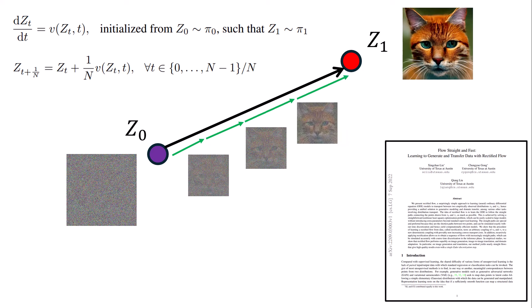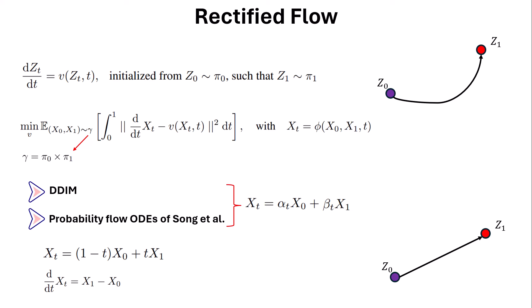So in the paper they said: let's come up with something whose derivative is a single line connecting Z0 to Z1. What they came up with is: Xt = (1 - t) * X0 + t * X1. At t=0, we have X0; at t=1, we have X1. If we take the derivative with respect to t, we get X1 minus X0 — the line connecting Z0 to Z1. So in the loss function, we replace the derivative of Xt with respect to t by X1 minus X0.